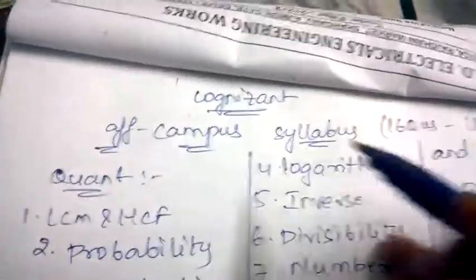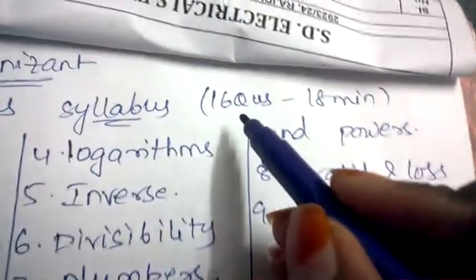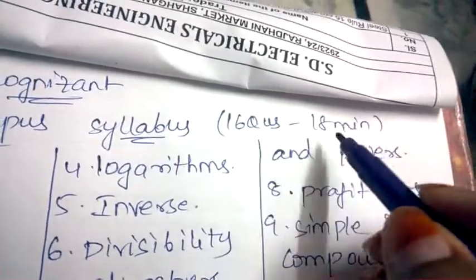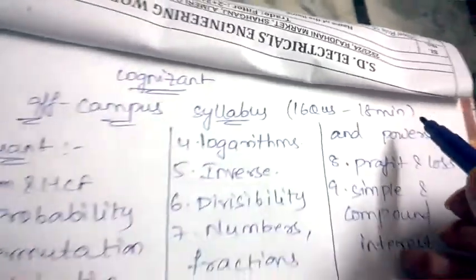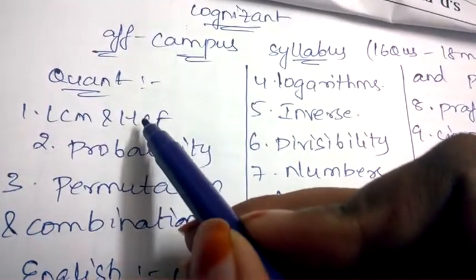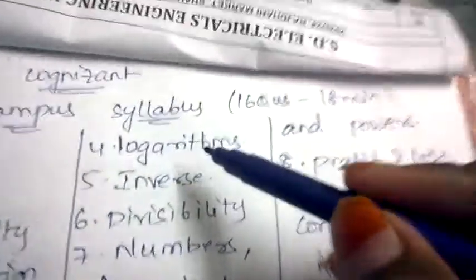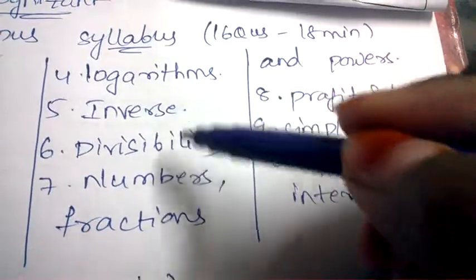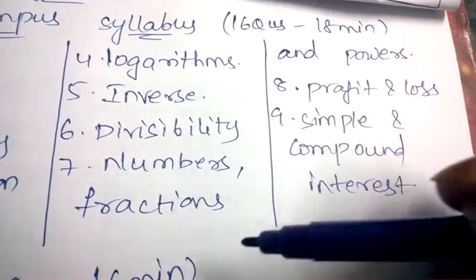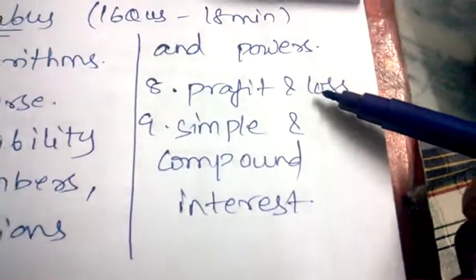Coming to Cognizant off-campus, off-campus syllabus will have 16 questions in 18 minutes for quantitative, which contains the topics of HCF and LCM, probability, permutation and combination, logarithms.